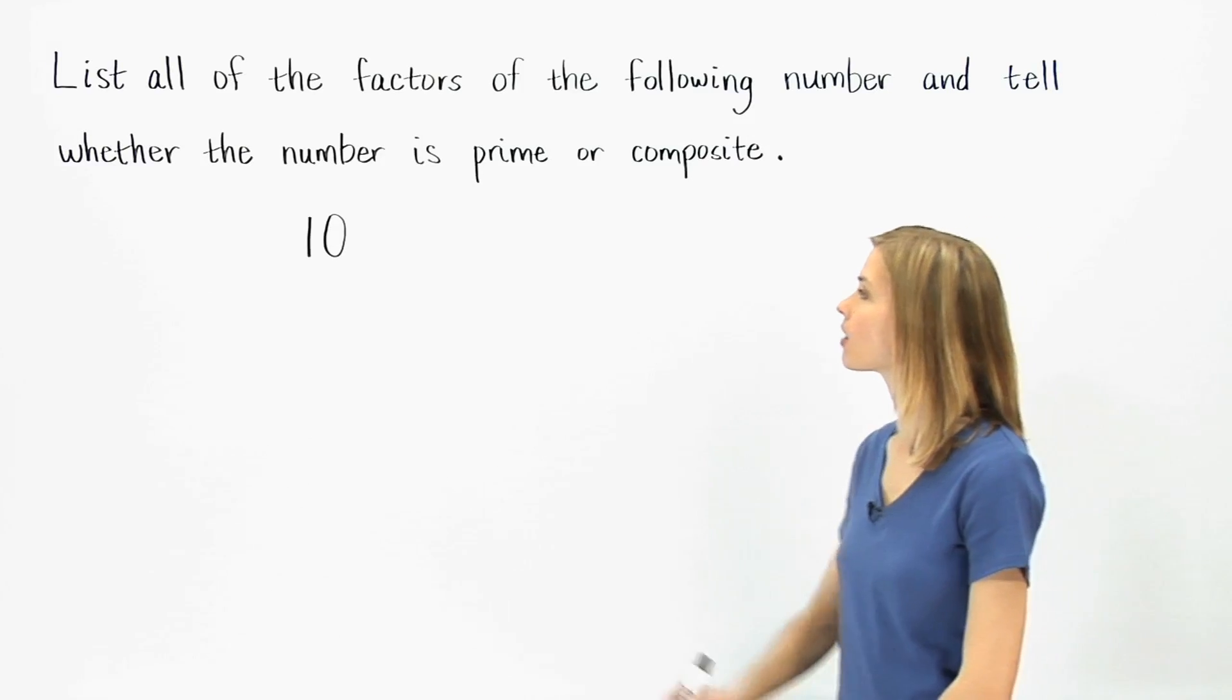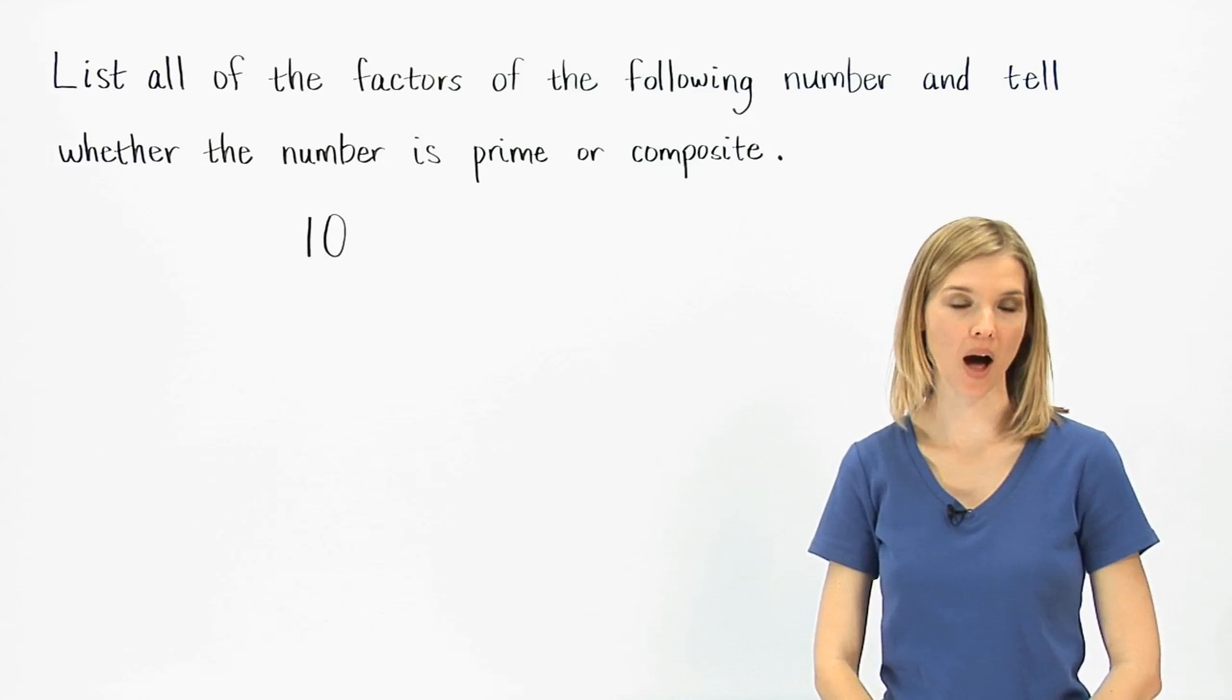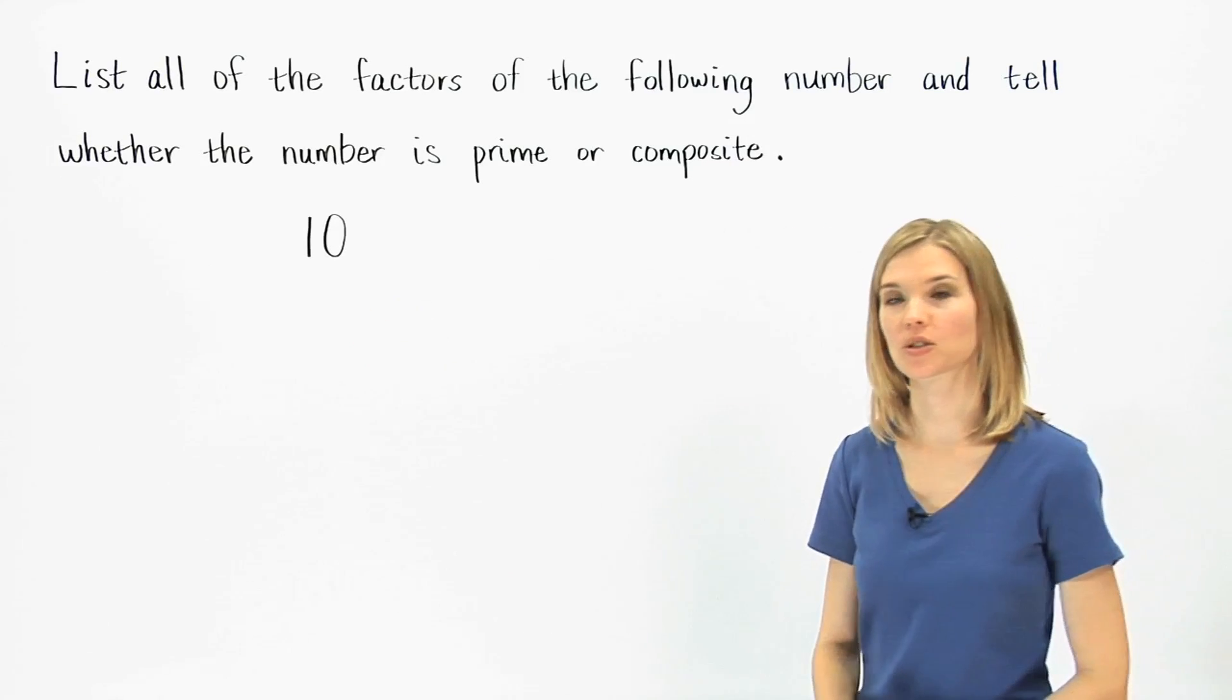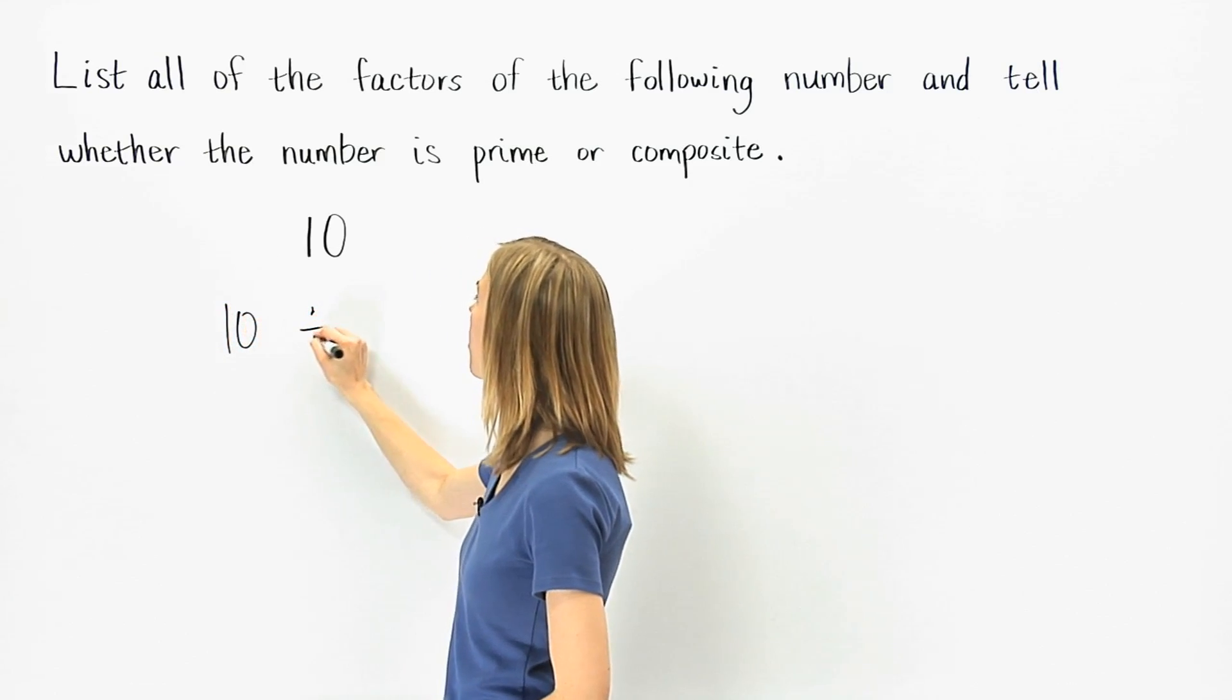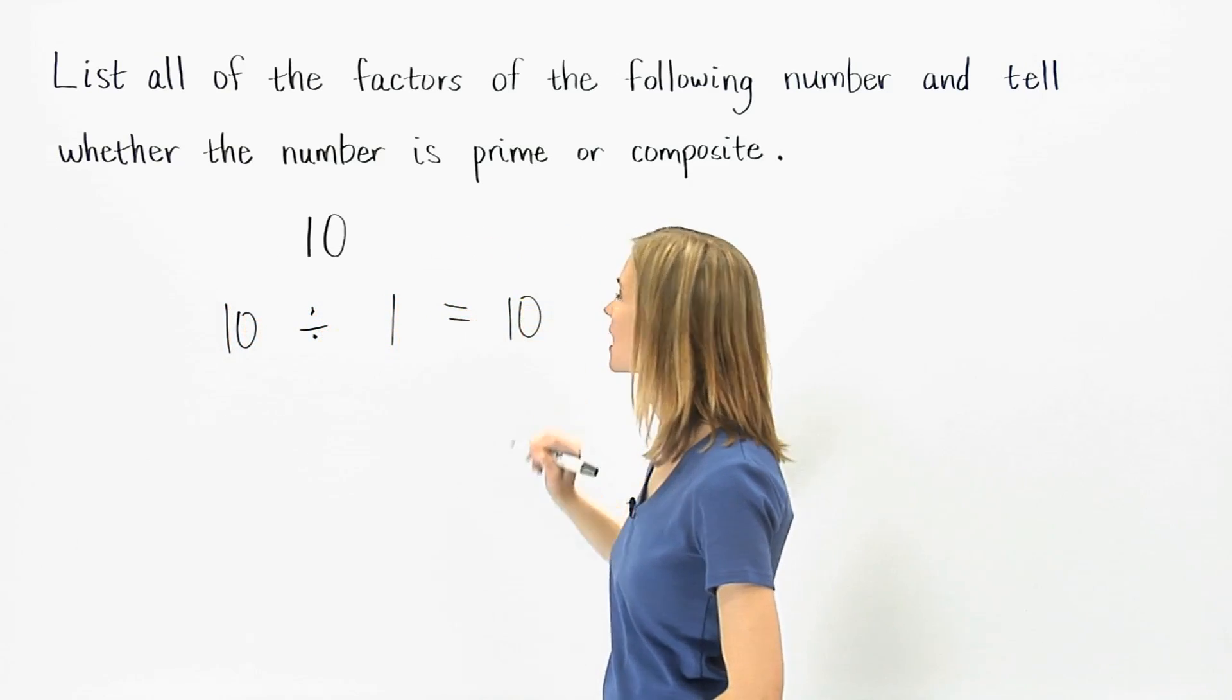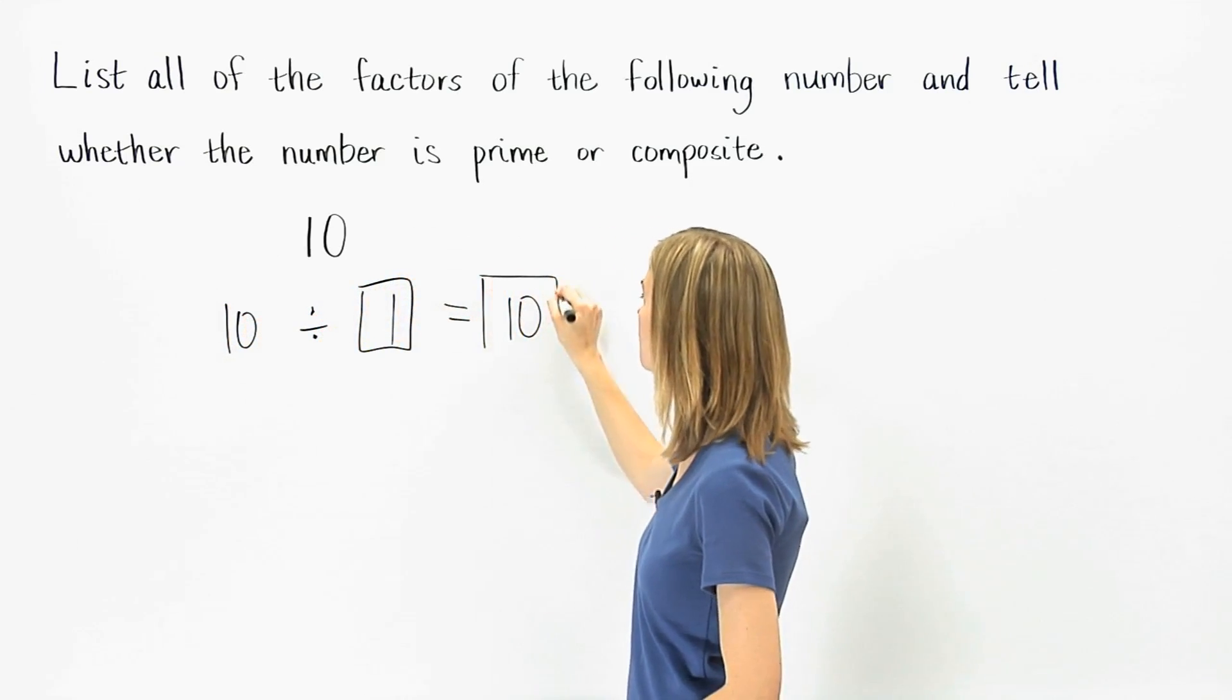Here we're asked to list all of the factors of 10 and tell whether the number is prime or composite. To find the factors of 10, begin by dividing 10 by 1, which gives us 10.